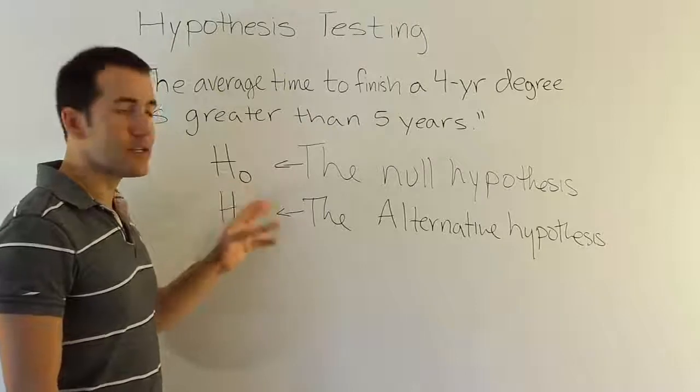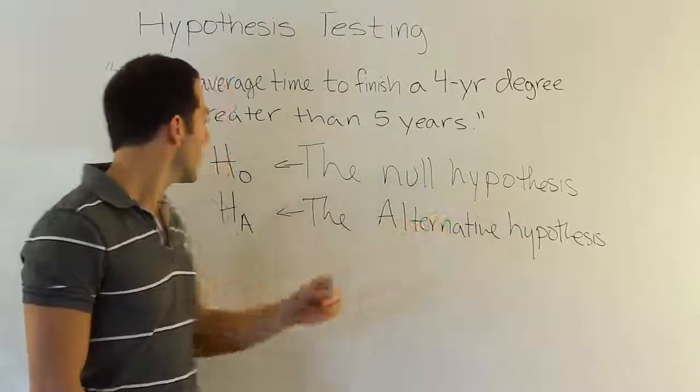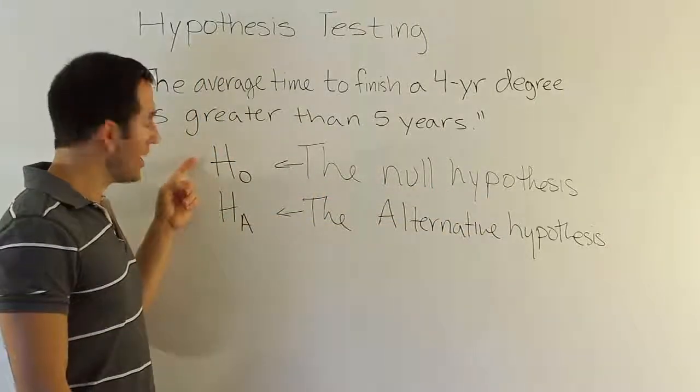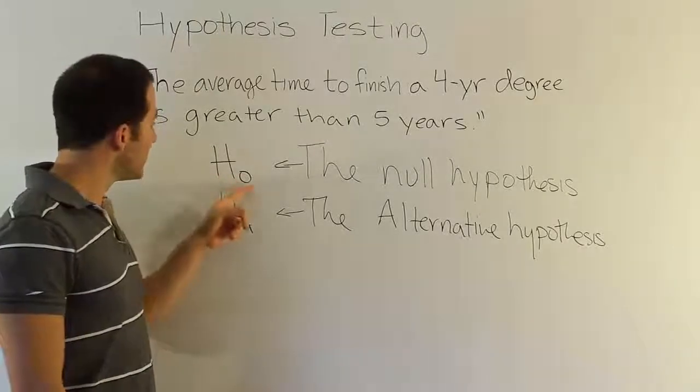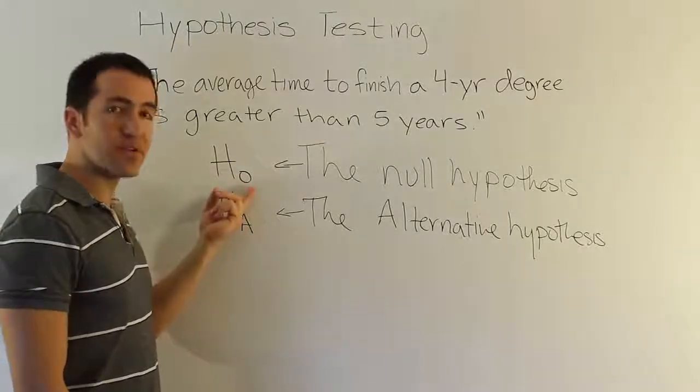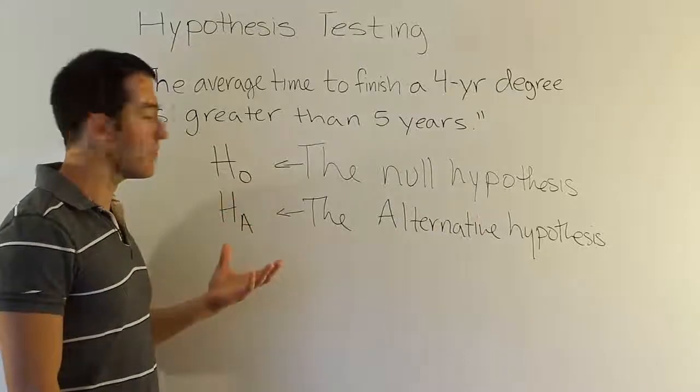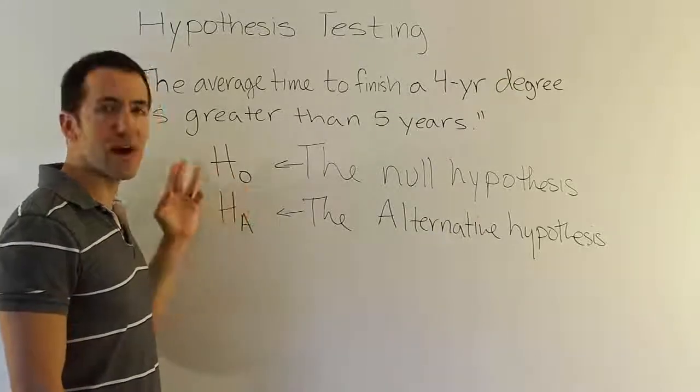Let's talk about first the notation. The null hypothesis is represented by H sub zero, or H naught. A subscript of zero usually represents an initial condition, so we can think of this as our initial hypothesis.